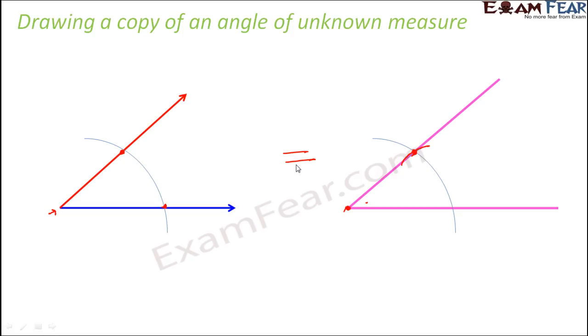So in this fashion, we can draw a copy of an angle of unknown measure. So we did not know the measure of the first angle, but we could still make a copy of it using the compass.